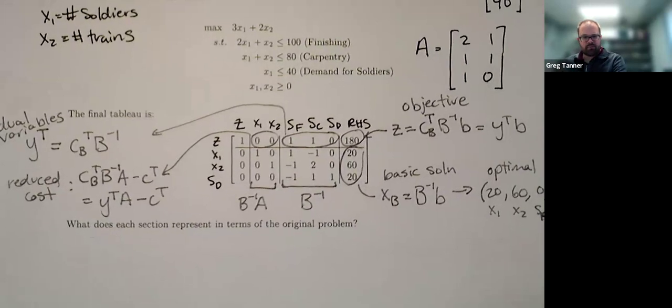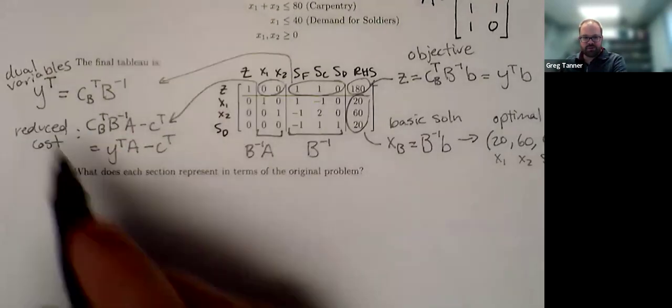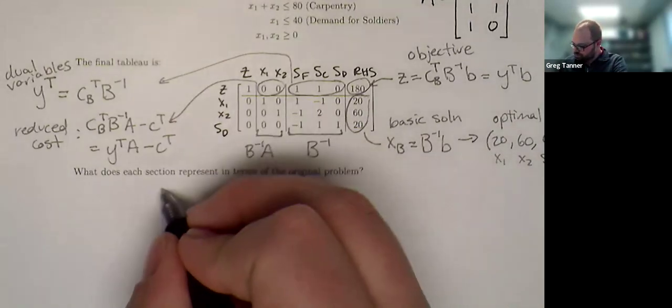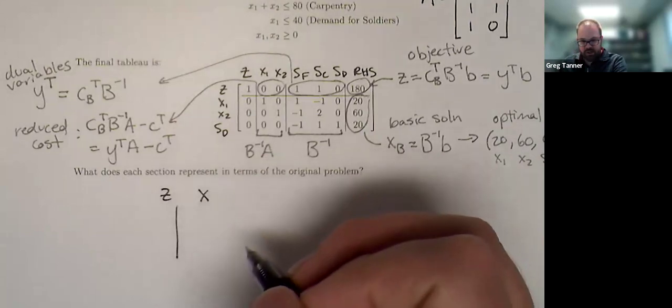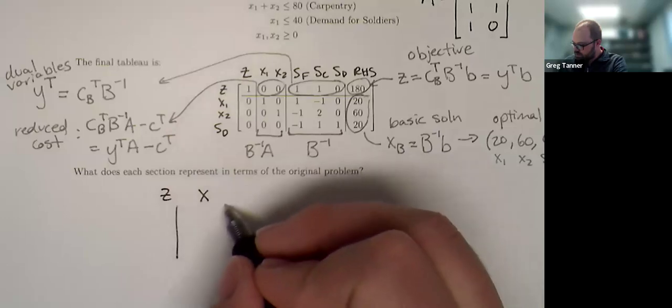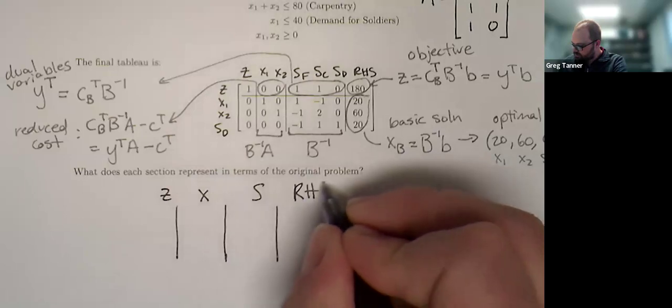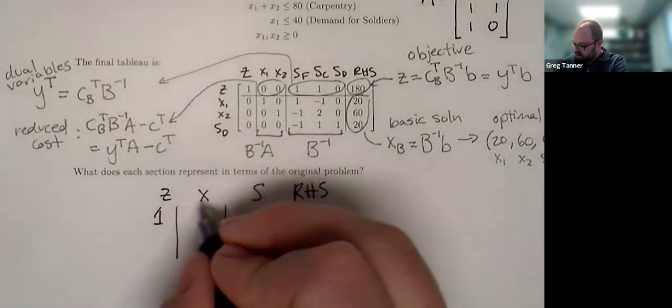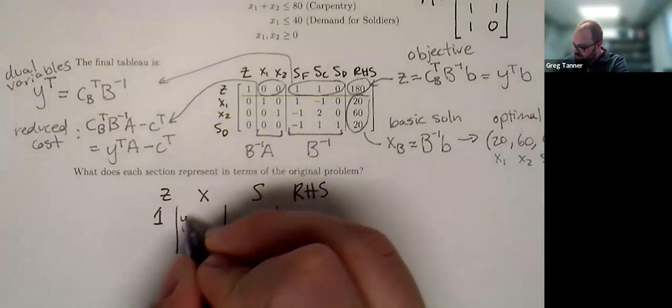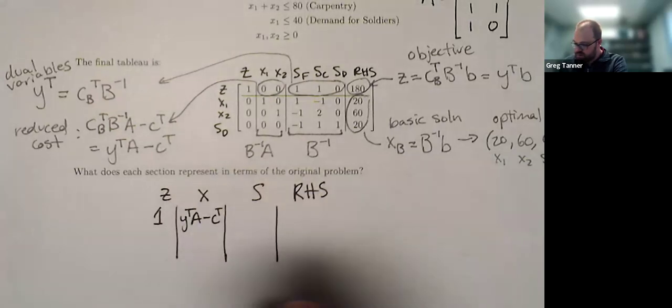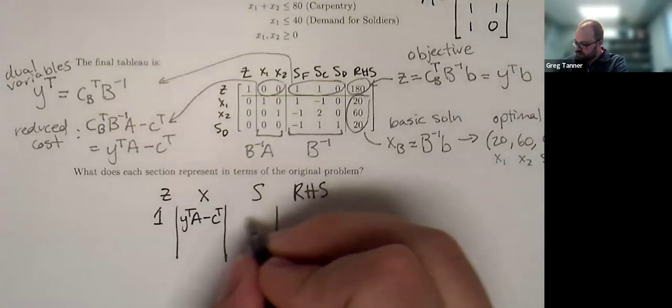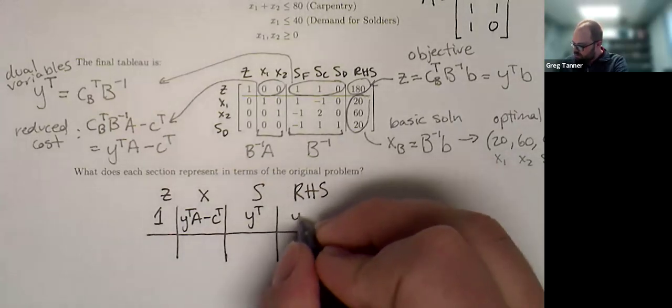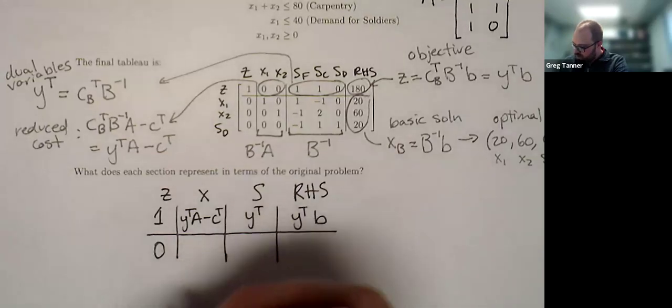Okay. Yeah, let's just summarize what we have spread out all over here as far as the different parts of our matrix or our tableau. I'll split this up with a little bit more generality into our Z variables, our X variables, our Slack variables, and then our right-hand side. The Z column's always going to have a one there. Underneath the X in the objective row, that's where we'll get the reduced cost of Y transpose A minus C transpose. Underneath the S, that's where we'll get our Y transpose. And then our right-hand side will be Y transpose B.